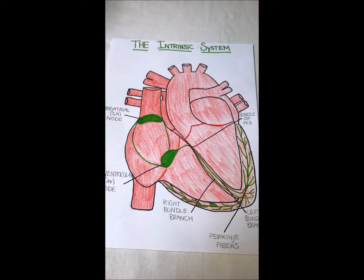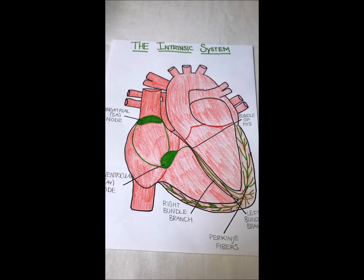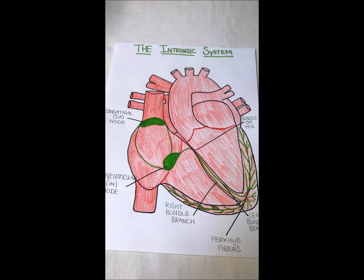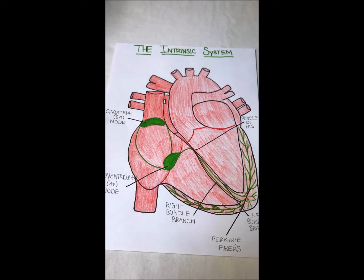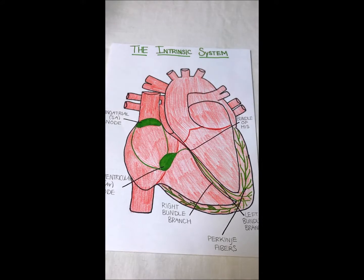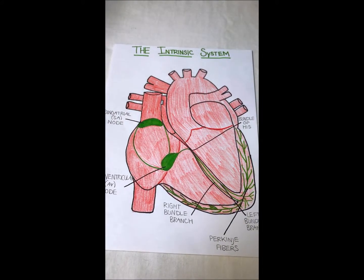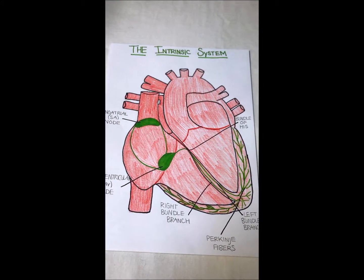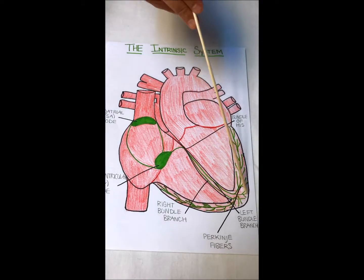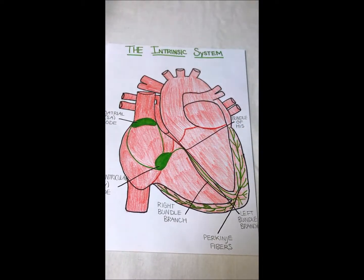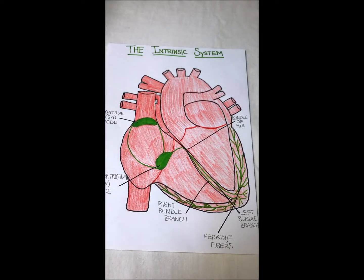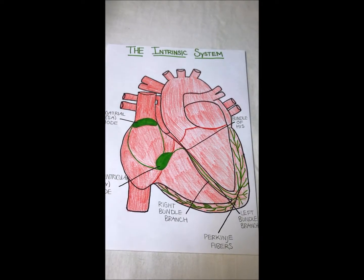The bundle of His then splits off into the right and left bundle branches. These branches extend down to the apex. Once there, the impulse reaches the Purkinje fibers. These fibers fire at the walls of the ventricles and tell them to contract. This happens every time your heart beats.